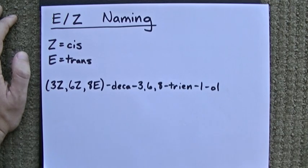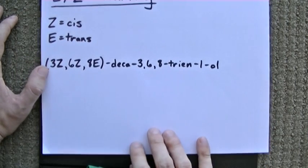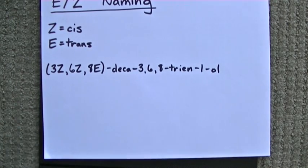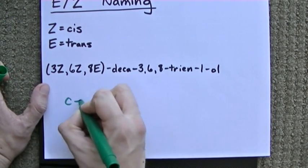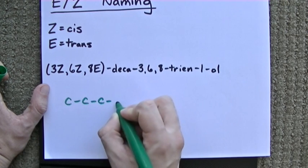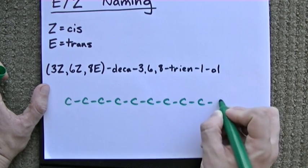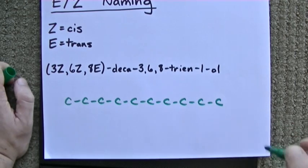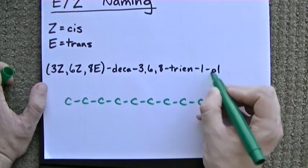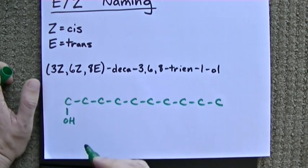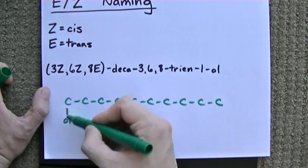Let's draw the structural diagram for this molecule together. First, I'll start with a 10-carbon chain because it's deca. 1, 2, 3, 4, 5, 6, 7, 8, 9, 10. I'm going to put my OH group on carbon 1. That makes it deca-1-ol.